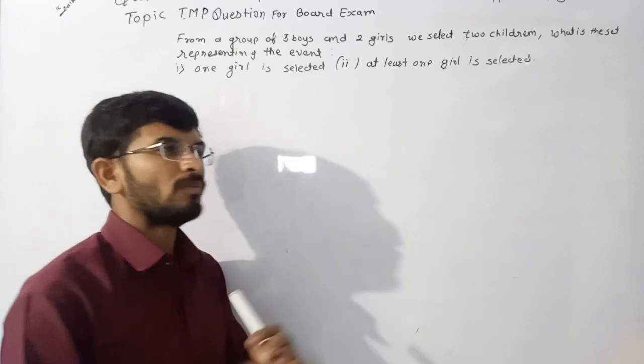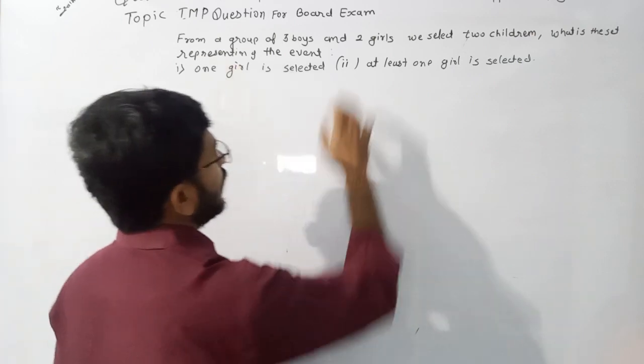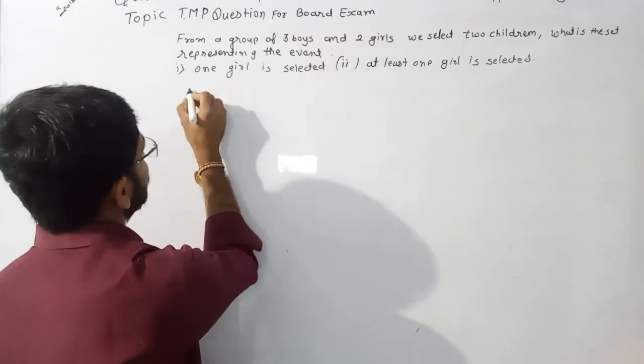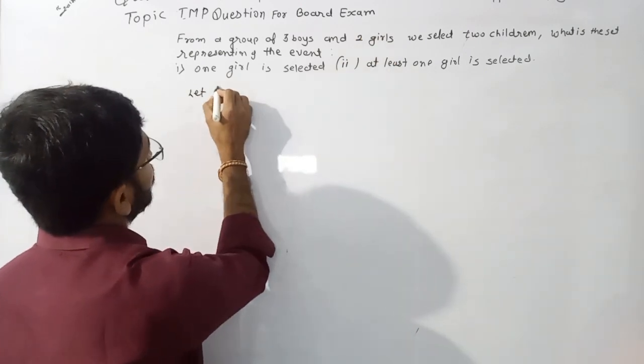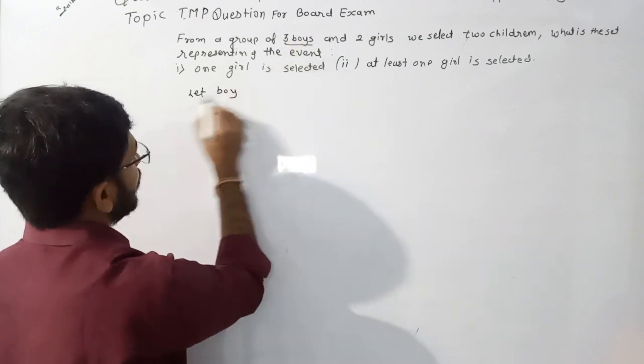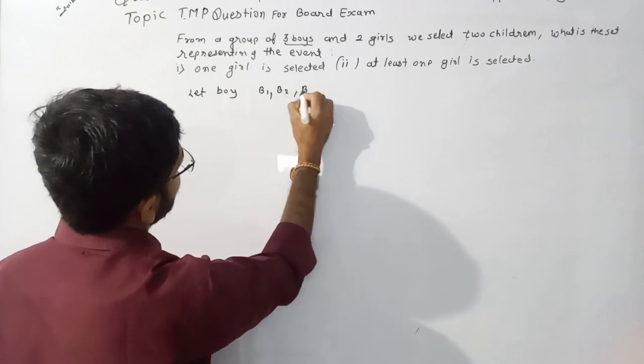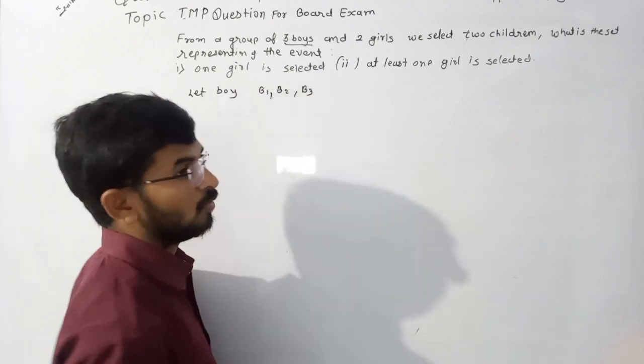Now, from a group of three boys and two girls, let the boys be numbered as B1, B2, and B3—these are the three boys.